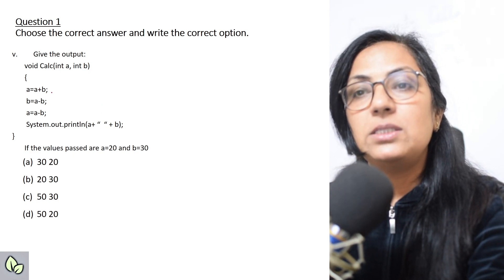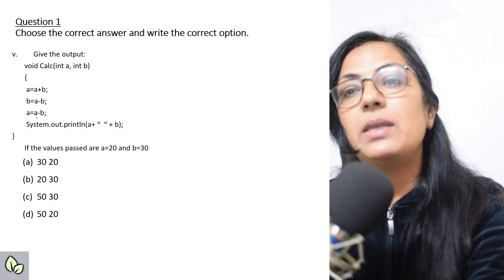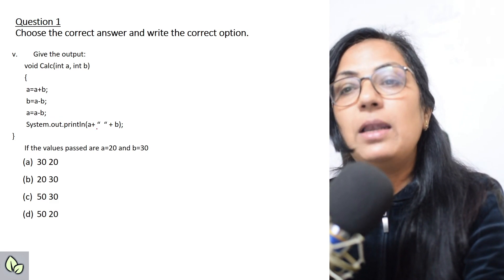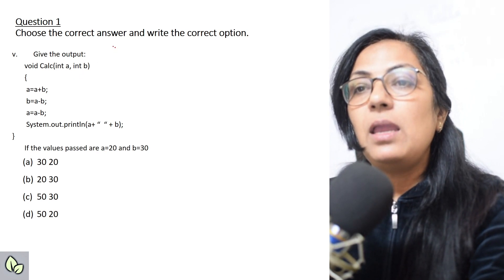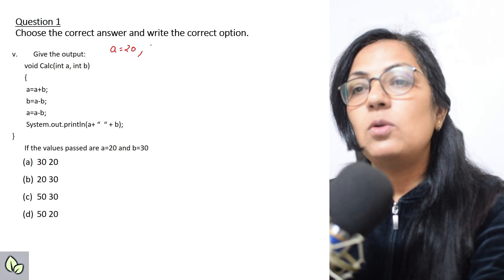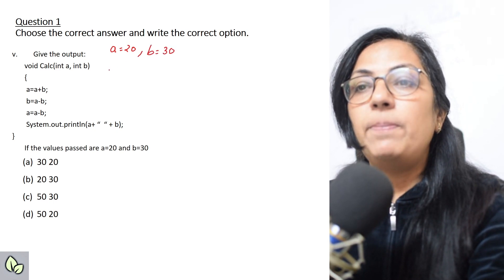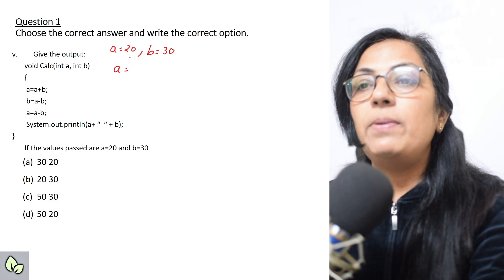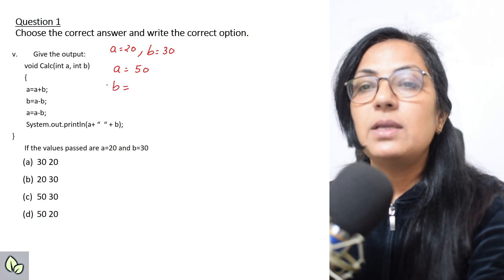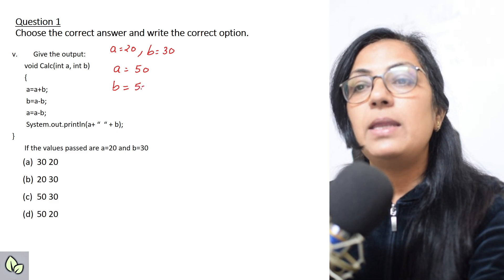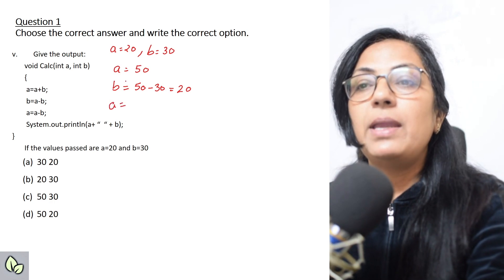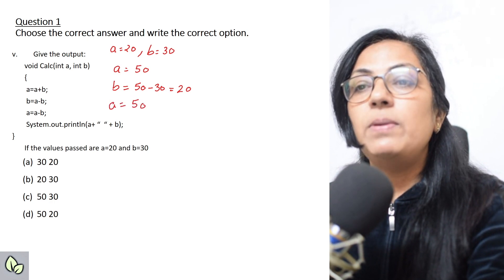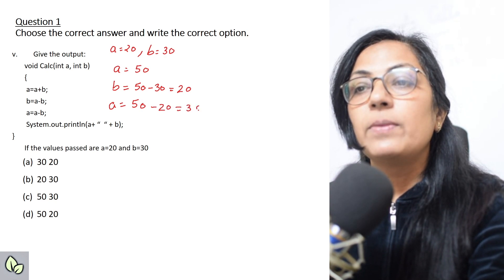Void calc int a int b. a equals to a plus b, b equals to a minus b, a equals to a minus b, and print the value of a and b. If the values passed are a equals to 20 and b equals to 30, let us calculate. a equals to a plus b, 20 plus 30 will be 50. b equals to a minus b, now what is the present value of a? It is 50 minus 30, so the value of b will be 20.